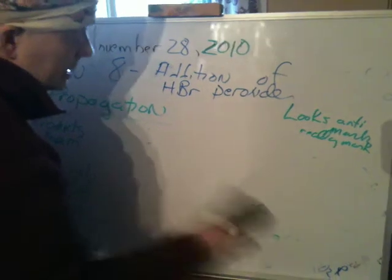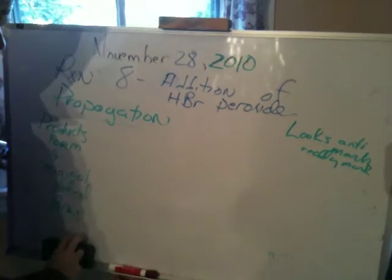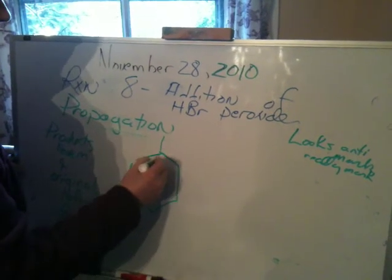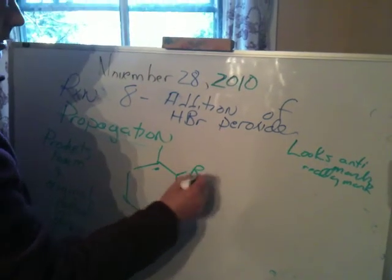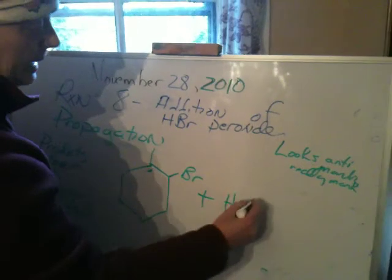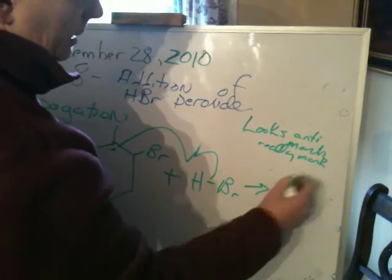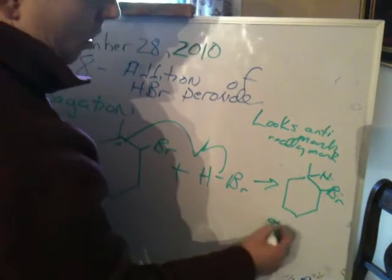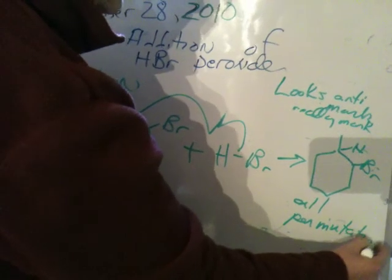The second propagation step involves taking the radical just made. In a good propagation, you're always making your products but also making the original radical. In the second propagation, you would pop the H off the HBr, make your product, and then work out your stereochemistry. You would get all permutations — I'll talk more about that in class. I'm not writing terminal steps because they're not that important.